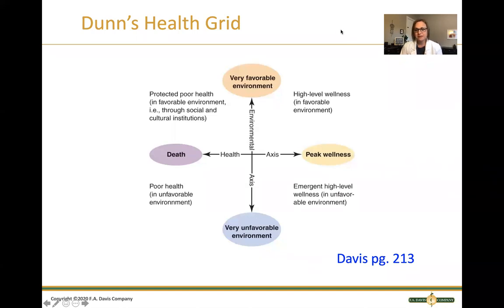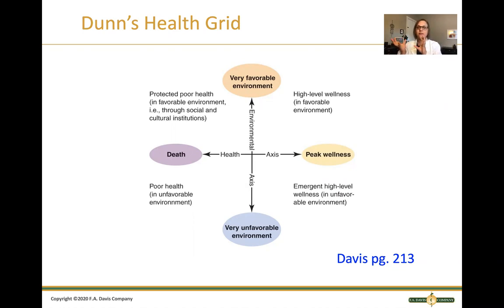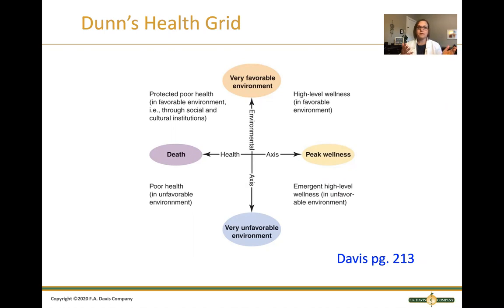Dunn's Health Grid, from Davis page 213, shows an interesting connection between environment and health. When you're in a favorable environment and at peak wellness, you experience a high level of wellness. Depending on how your environment and health shift and interrelate, you can experience different manifestations of health or wellness — relating to both your personal health and the environment you're in.